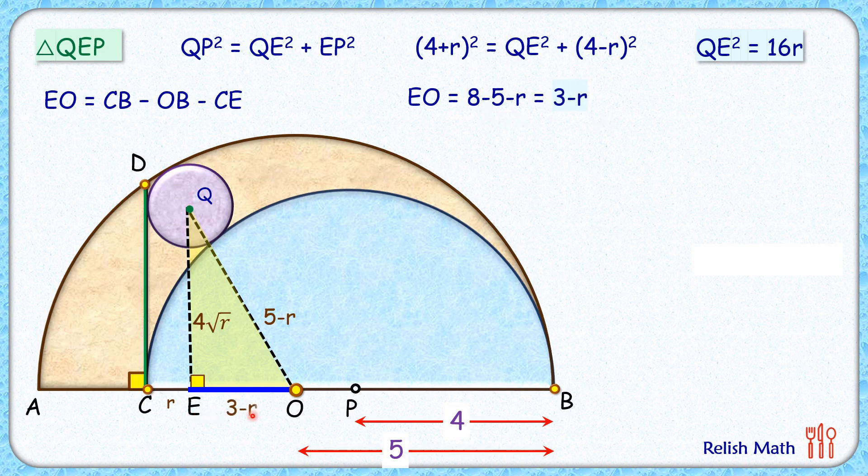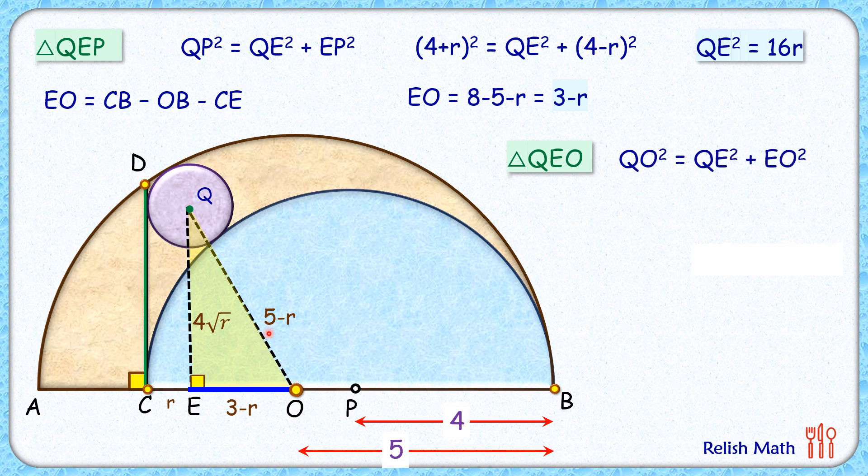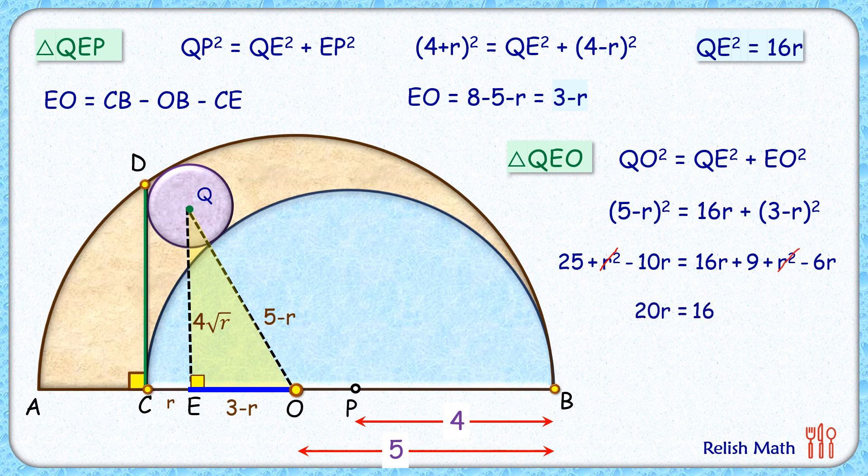So this EO length is 3 minus r. In triangle QEO, applying Pythagoras theorem, we will get QO² equals QE² plus EO². Putting the values and opening the brackets will get a quadratic in terms of r. Both sides r² will cancel down. Simplifying, we get 20r equals 16, or r is 0.8 centimeter—and that's our answer.